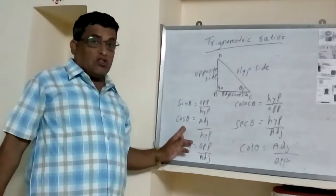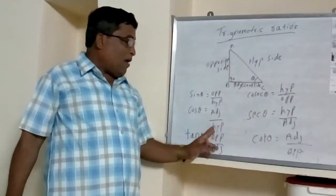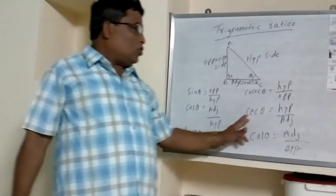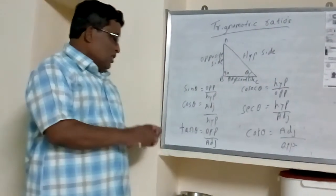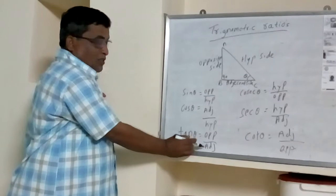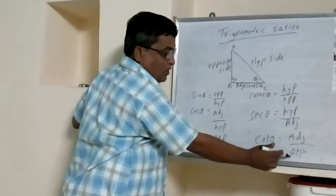The third trigonometric ratio is cos θ, which equals adjacent side divided by hypotenuse side. Secant θ equals hypotenuse side by adjacent side. Tan θ equals opposite side by adjacent side, and cot θ is adjacent side by opposite side.